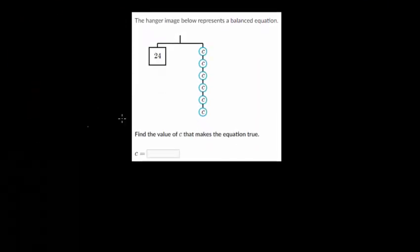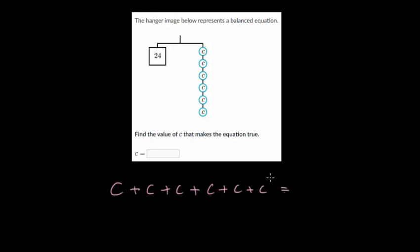In the next problem, on the left side there's a weight of 24, and on the right side there are multiple c weights. We don't know what c is — that's what we're trying to find. Counting them up: one, two, three, four, five, six — so six c's combined together must equal 24 to keep the hanger balanced. We can write this as c plus c plus c plus c plus c plus c equals 24.